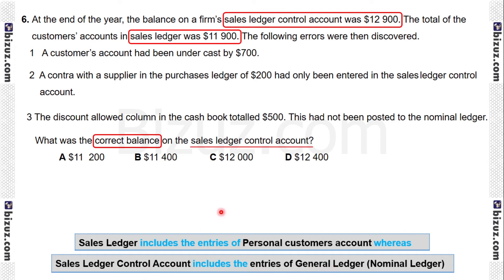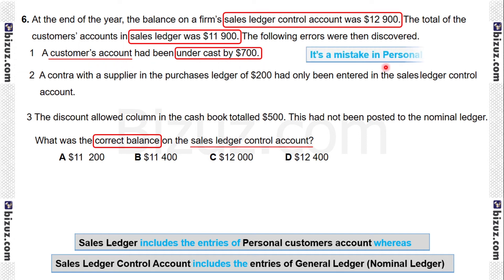Let's see the errors. Error number one: a customer's account had been undercast by 700. Here, the customer's account is a personal account, so this mistake is in the personal account and is part of the sales ledger. Therefore we should not consider this in our workings for the sales ledger control account.